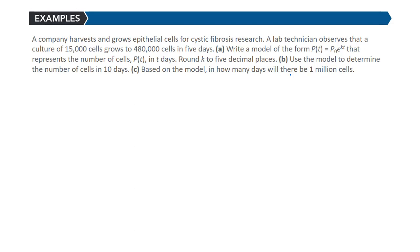The first thing we need to focus on is getting the model. The model requires us to know a beginning value, ending value, and the time that it took to get that change. We have that - we started with 15,000 cells, it grew to 480,000 cells, and the time was 5 days. So in our model, P(t) = P₀e^(kt).